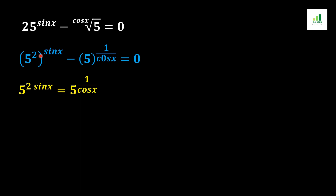In the next step, we write 5 squared with overall power sine x as 5 to the power 2 sine x, because from the basic rule of algebra, if a value has a power of a power, both powers multiply together. Applying this rule, we get 5 to the power 2 sine x. This value moves to the other side of the equation and becomes positive, equal to 5 to the power 1 over cos x.